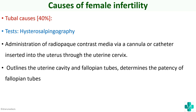Hysterosalpingography involves administration of radiopaque contrast media via a cannula or catheter inserted into the uterus through the uterine cervix. It outlines the uterine cavity and fallopian tubes and determines the patency of the fallopian tubes. This description is useful for producing a complete written answer on this topic.